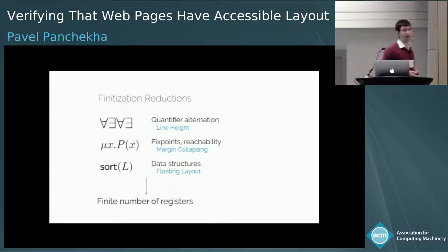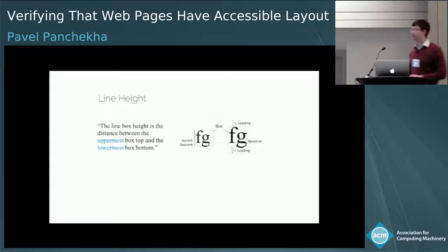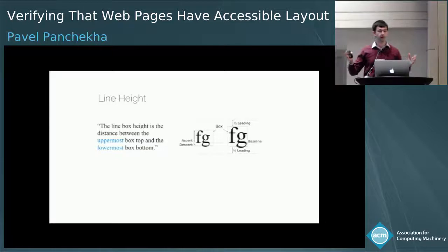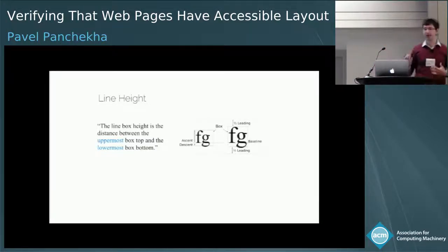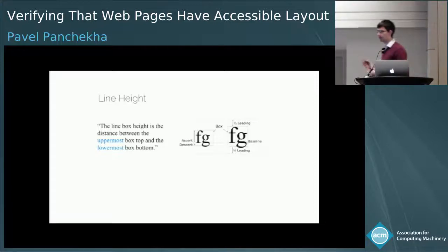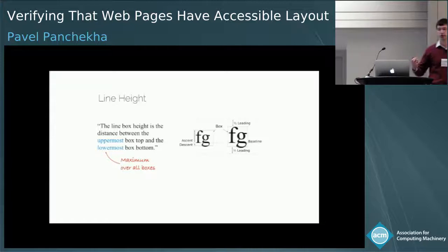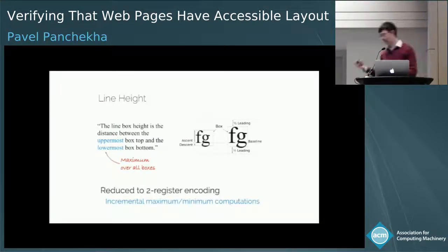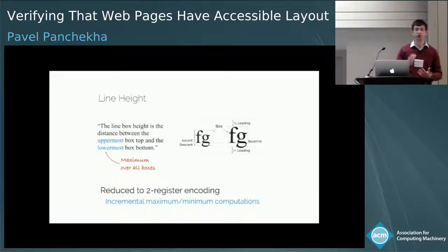I'll start with line height. Line height is defined in CSS as the distance between the uppermost box top and lowermost box bottom over all of the boxes in a line, where a box is a continuous span of text all in one font. This is important because a line of text can mix text of different fonts and different sizes. What's challenging is that this represents a maximum over an arbitrary-size set of boxes. To represent this, we encoded it incrementally: every box computed the running minimum and maximum for all boxes to the left of it in that line of text, tracking two real numbers per box.